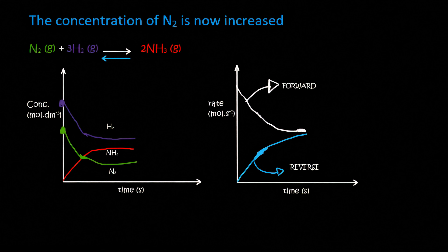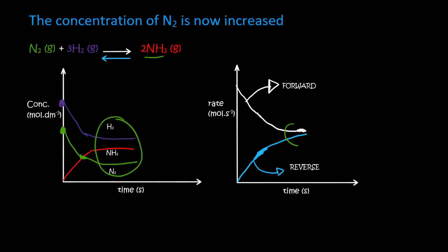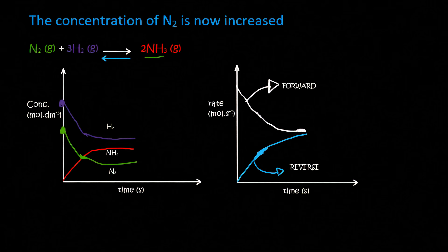In the previous lesson we looked at a system of nitrogen reacting with hydrogen to form ammonia, and I showed you how the system reaches equilibrium for the first time. The system is now in equilibrium — we can see that by these parallel lines and the rate has become constant. Now we are going to make a change to the system. Remember, Le Chatelier says that if we change concentration, pressure, or temperature, we can take the system out of equilibrium, and then the system will react in such a way to try and restore equilibrium.